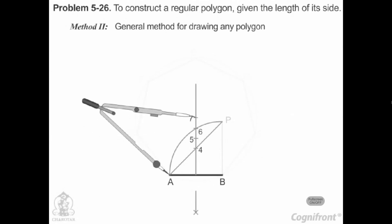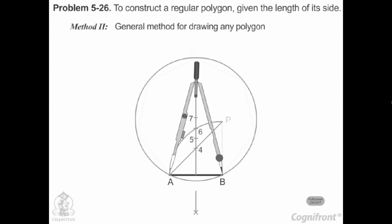With center 7 and radius equal to A7, draw a circle. Starting from B, cut it in 7 equal divisions with radius equal to AB. Draw lines BC, CD, etc., and complete the heptagon.